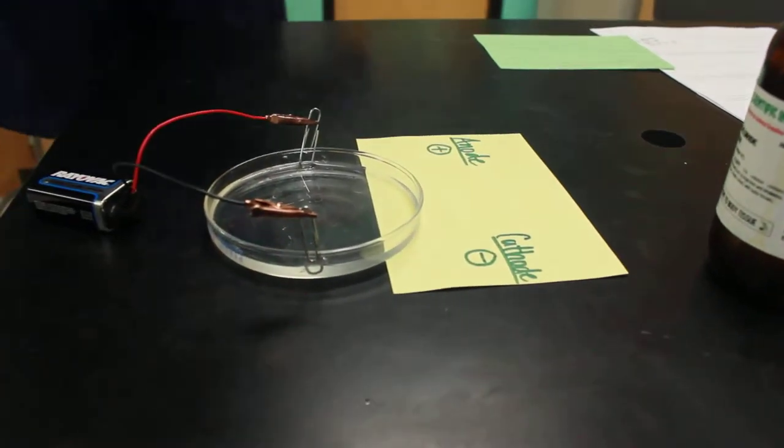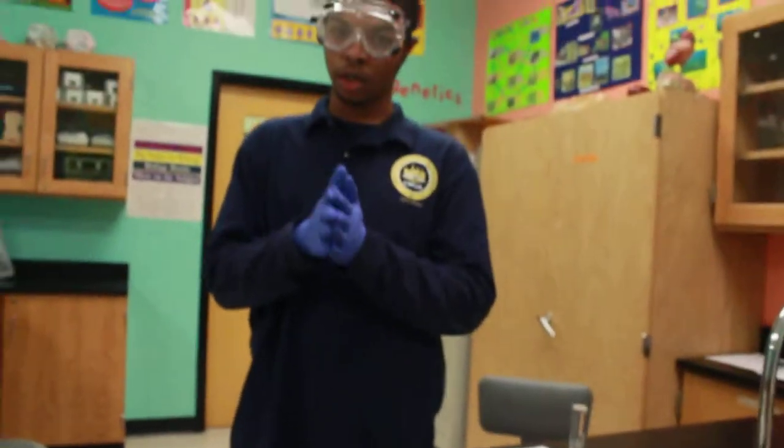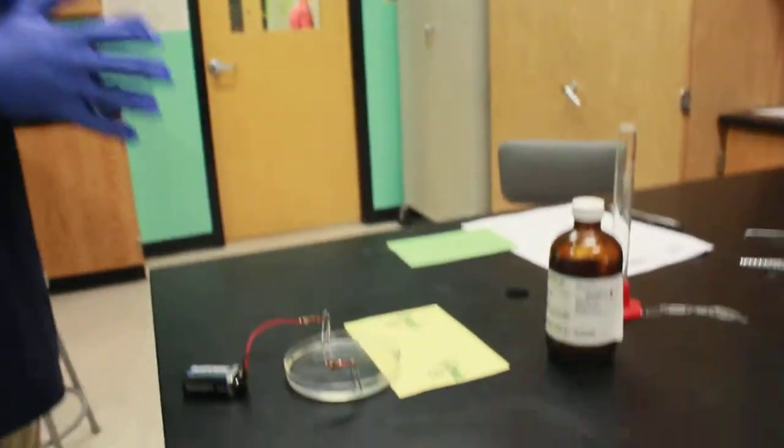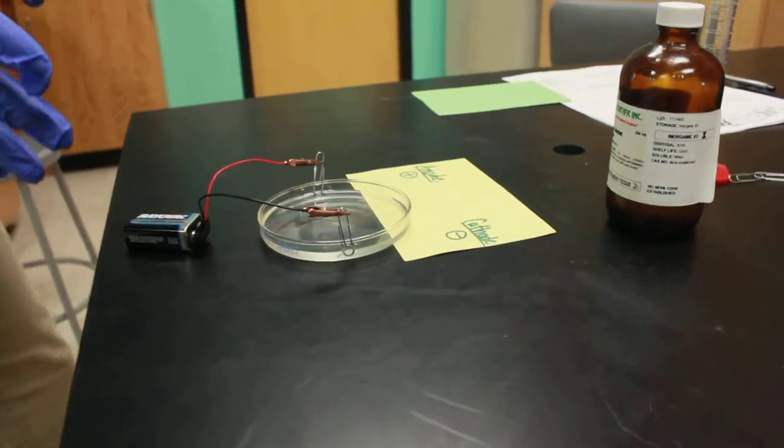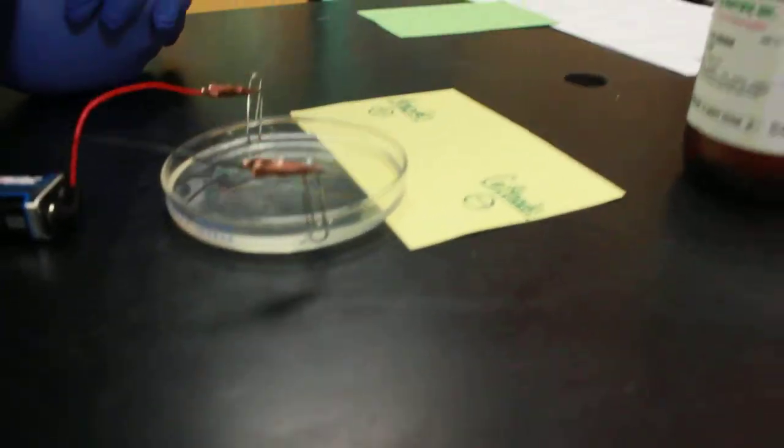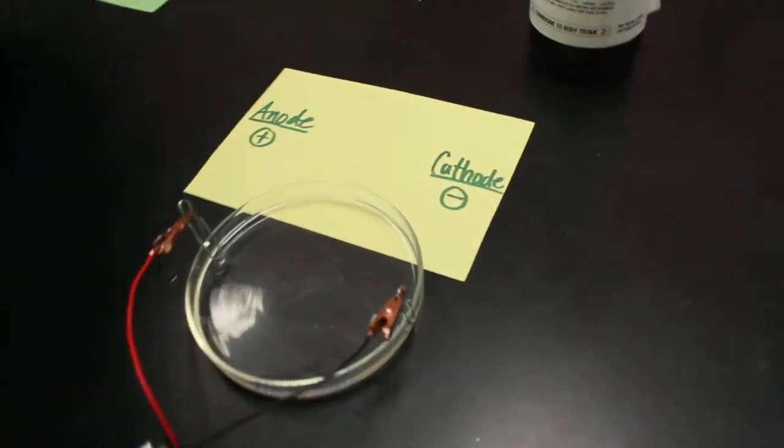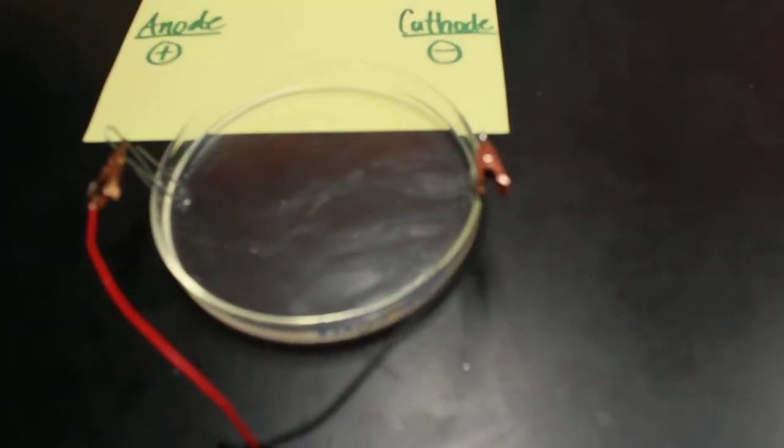Now, because this is an oxidation reduction reaction, this is going to show us the difference. So on the cathode, we will soon see, if you come close, you can see that it's starting to begin to create a little branch.